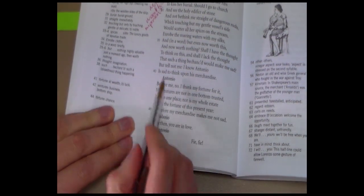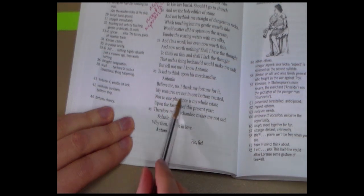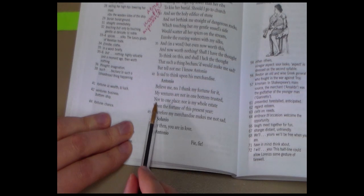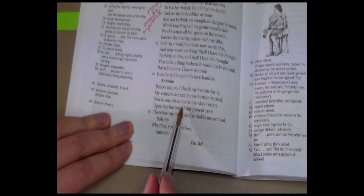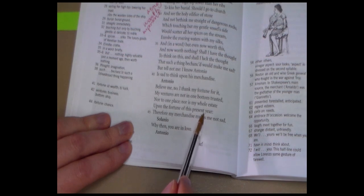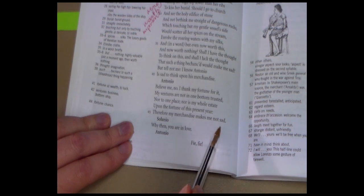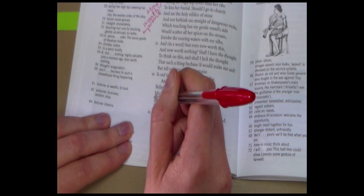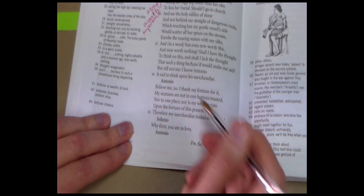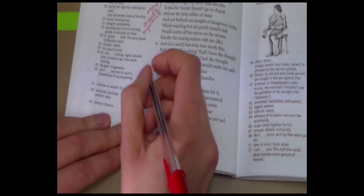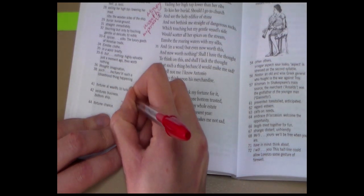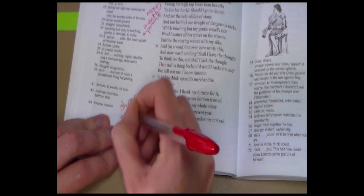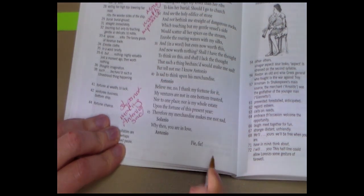Antonio, however, says that actually his ventures are not in one bottom trusted, so not all of his money is on the same ship. And not all of his ships are going to the same place, when he says nor to one place. Nor is my whole estate upon the fortune of this present year, so he hasn't actually sent out all of his money. So he says, to be honest, my merchandise makes me not sad. So he makes it really clear at this point that it's not money and it's not his ships that are making him sad, because he hasn't put all of his money in one venture. So we'll write down at the side, ships not making Antonio sad.